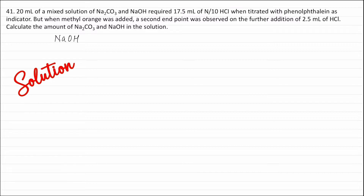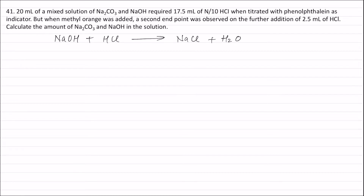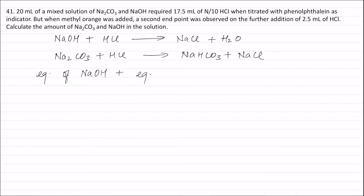When phenolphthalein is used as indicator, the reactions are: NaOH + HCl → NaCl + H₂O, and Na₂CO₃ + HCl → NaHCO₃ + NaCl. The equivalence of NaOH plus equivalence of Na₂CO₃ equals equivalence of HCl. Equivalence of HCl = (1/10) × (17.5/1000) = 0.00175 equivalents.